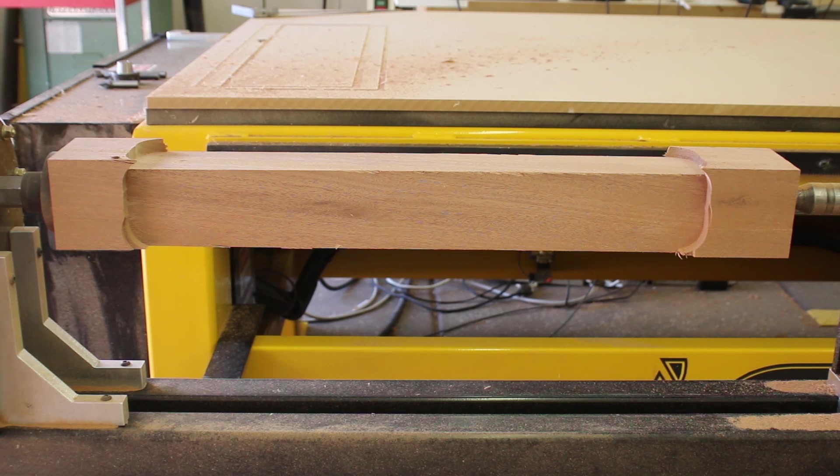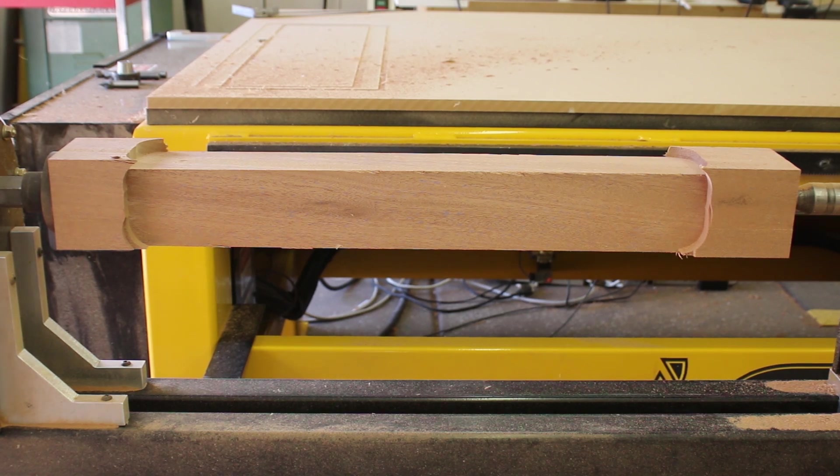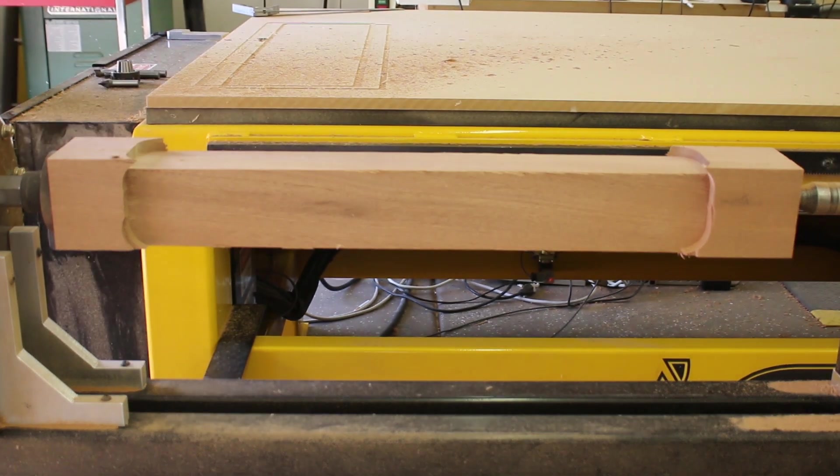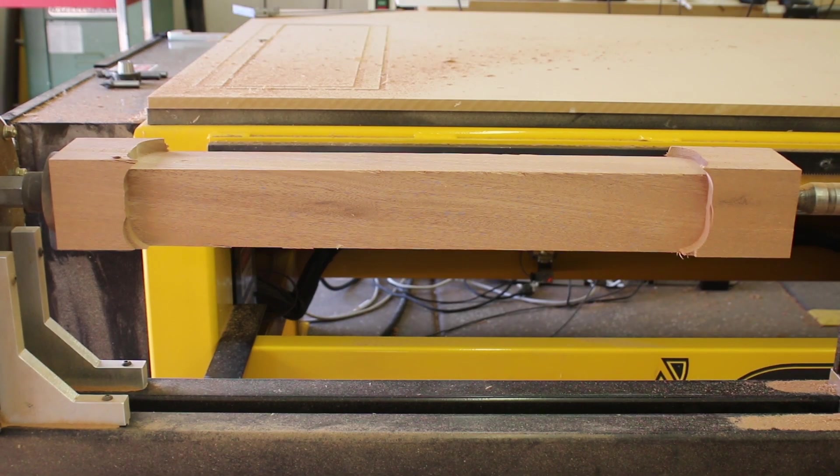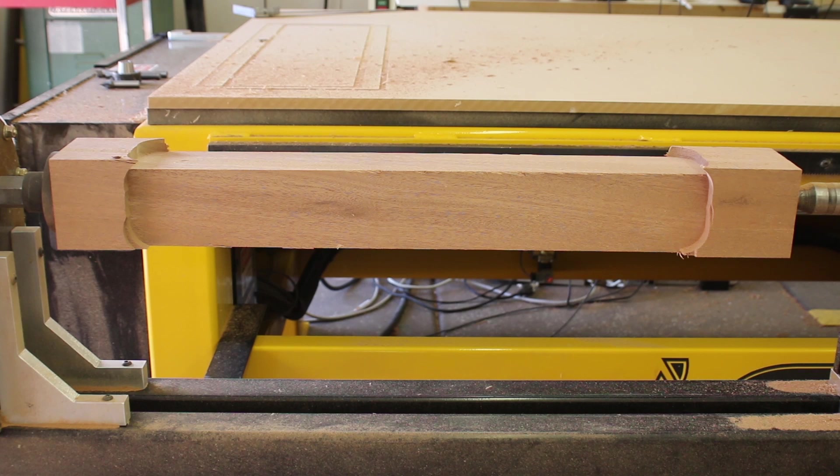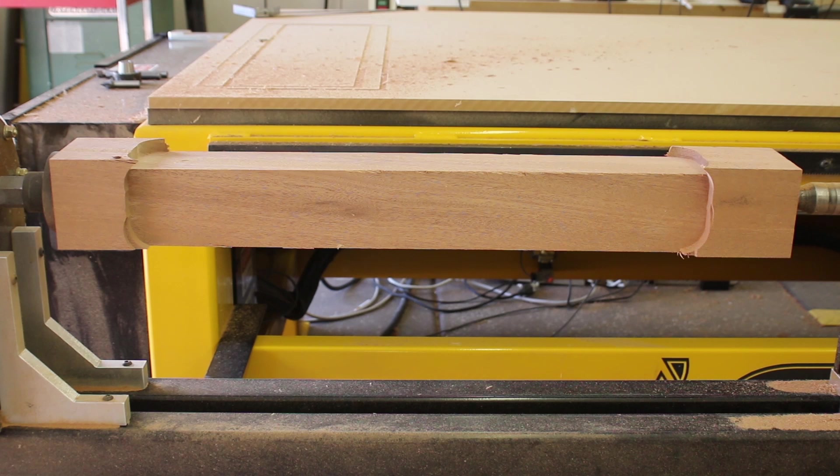Okay, with side two all completed, what we are going to do now is rotate. We'll type in A180, meaning we'll be 180 degrees from our first face. The stock will rotate here and then we'll cut side three.